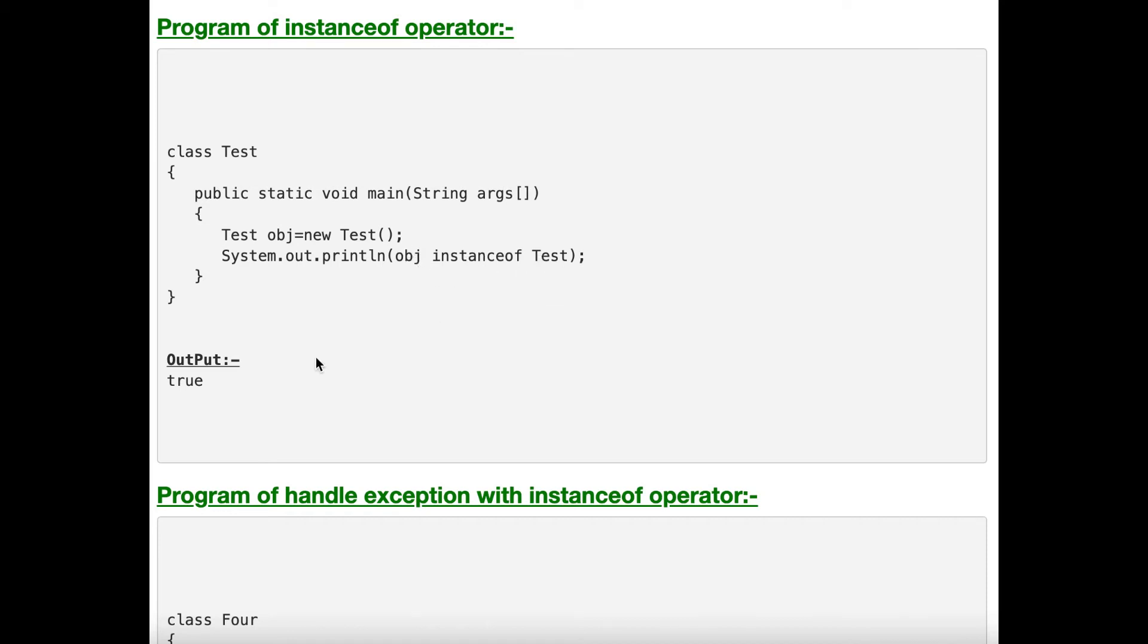It will give you true because the object we have created is from a Test class. We are calling new and then we are calling the default constructor of the class Test. It is really true because object obj is instance of Test; both types are the same, so it is giving true.